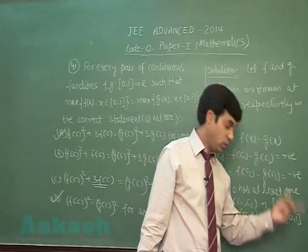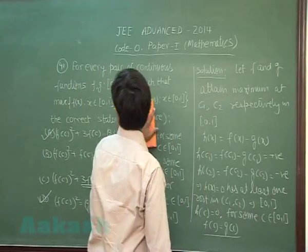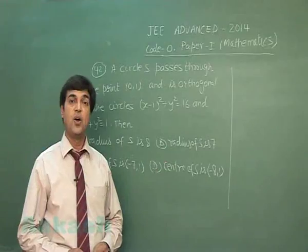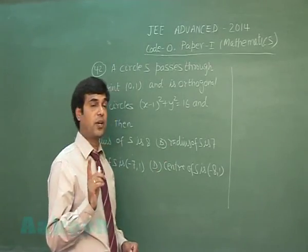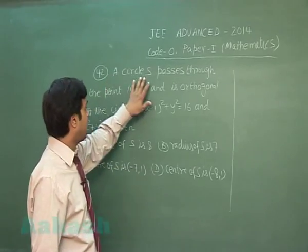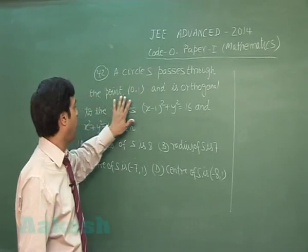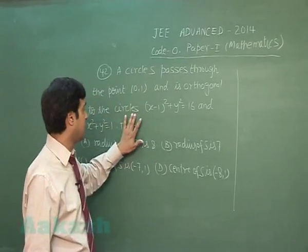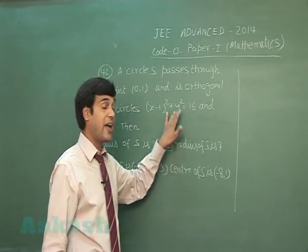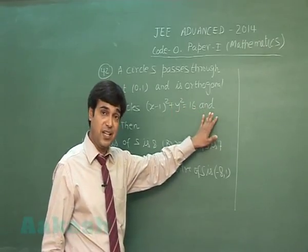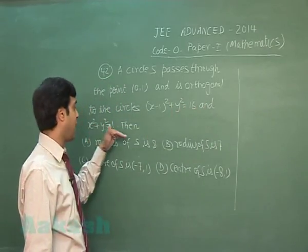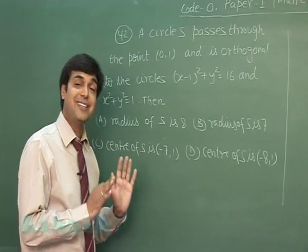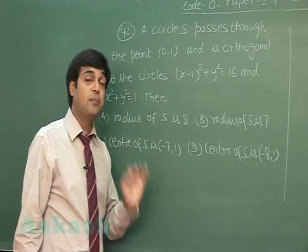Let's move to the next question, question number 42. A circle S passes through the point (0,1) and is orthogonal to the circles (x-1)² + y² = 16 and x² + y² = 1. Then we have to find radius and center of that circle. A simple question of coordinate geometry involving circles.